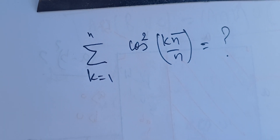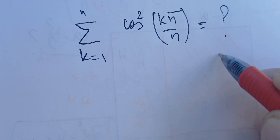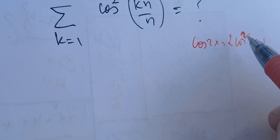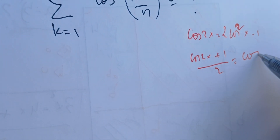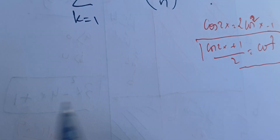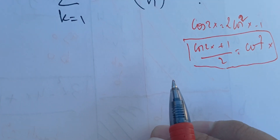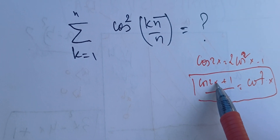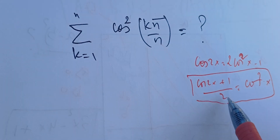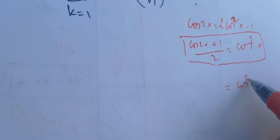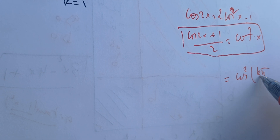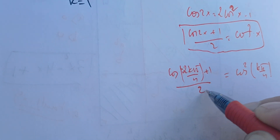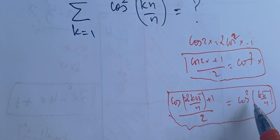One key idea is that cos(2x) = 2cos²(x) − 1. So rearranging: cos²(x) = (cos(2x) + 1) / 2. I added one to both sides and divided by two to get cos²(x). Now, with x = kπ/n, this gives cos²(kπ/n) = (cos(2kπ/n) + 1) / 2.